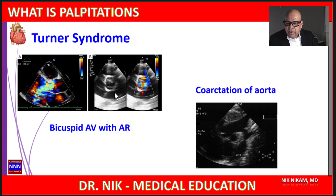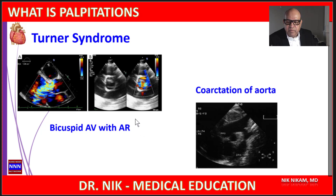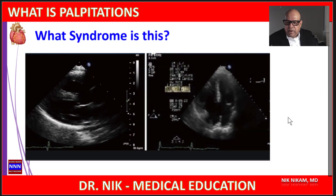Turner syndrome is characterized by bicuspid aortic valve along with aortic regurgitation in many cases, especially in the advanced stages, along with coarctation of the aorta. You may be presented with a picture of coarctation of the aorta and asked to recognize associated congenital cardiac abnormalities, or presented with a patient with bicuspid aortic valve and asked to identify associated malformations such as coarctation. Keep in mind: when you see a combination of bicuspid aortic valve with coarctation of the aorta, you are most likely dealing with Turner syndrome.